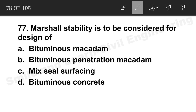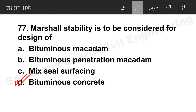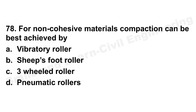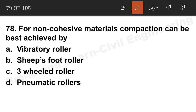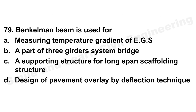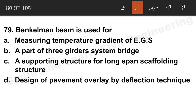Question 77: Marshall stability is to be considered for design of bituminous concrete. Option D is the correct answer. Question 78: For non-cohesive materials, compaction is best achieved by vibration using a vibratory roller. Option A is the correct answer.